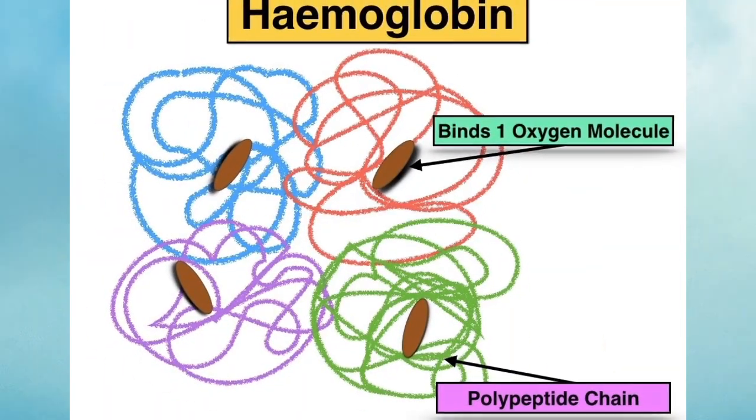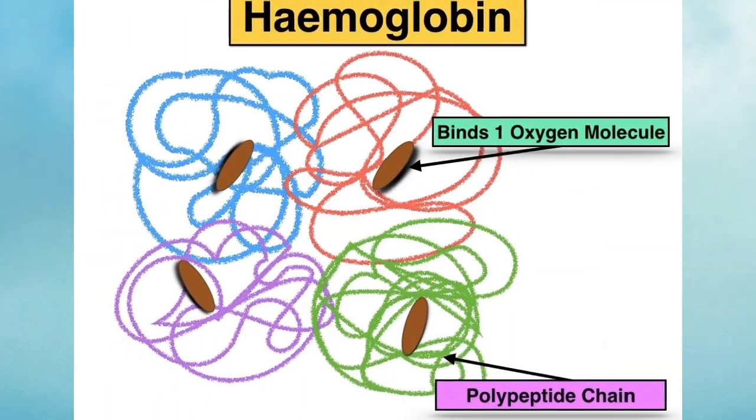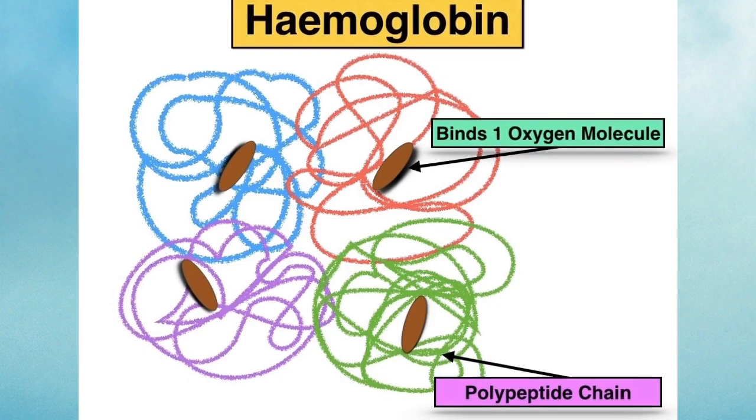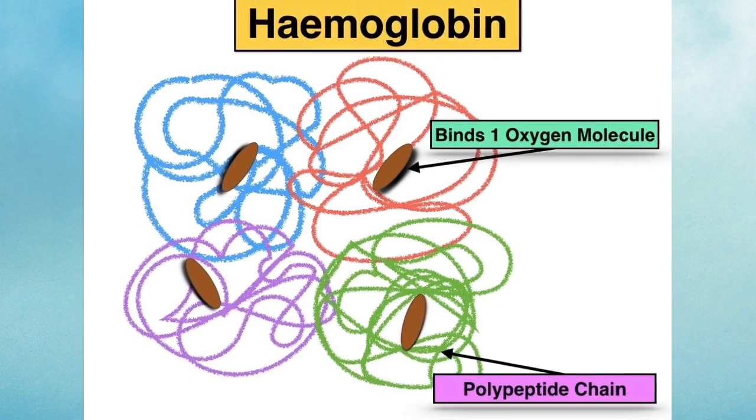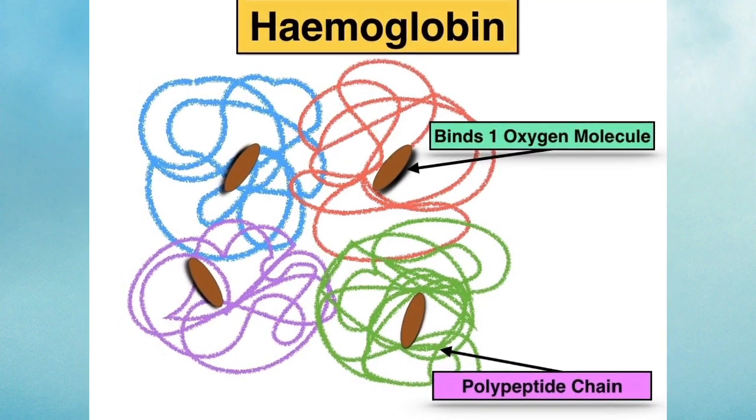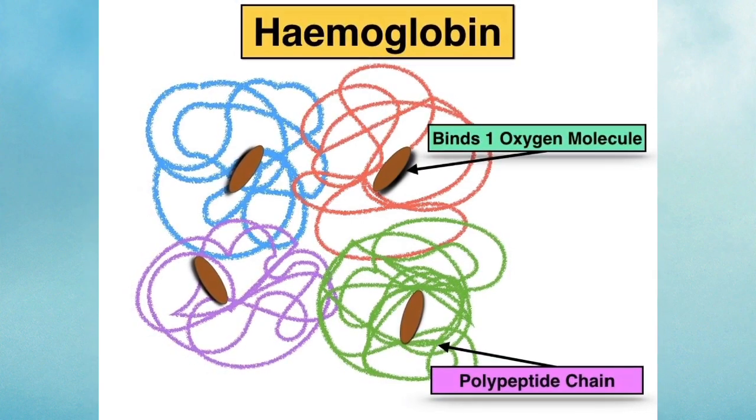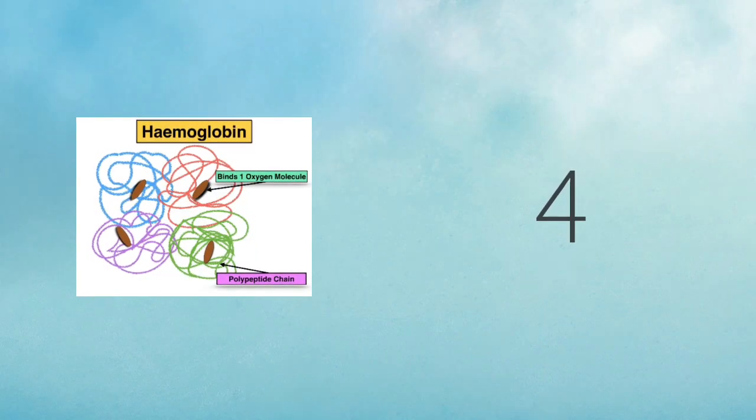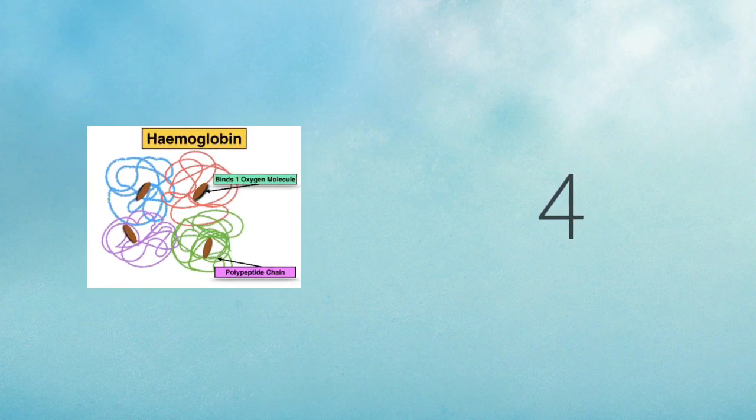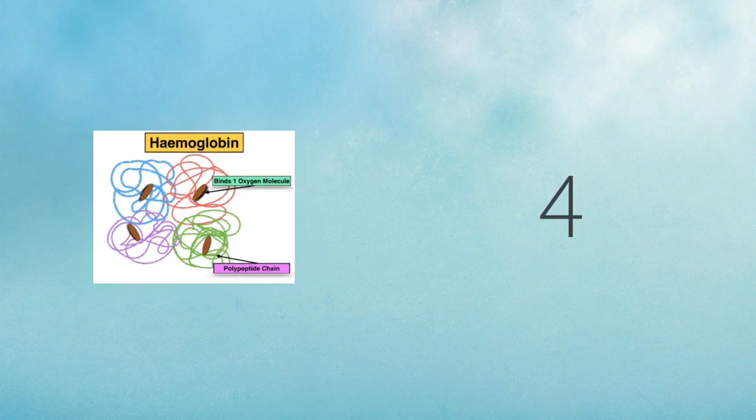If you examine the structure of haemoglobin, it gives you a better understanding of how exactly it transports oxygen. It's made up of four polypeptide chains, and at the centre of each of these chains are structures which bind one oxygen molecule. Each individual haemoglobin molecule therefore has the ability to bind or carry four oxygen molecules.